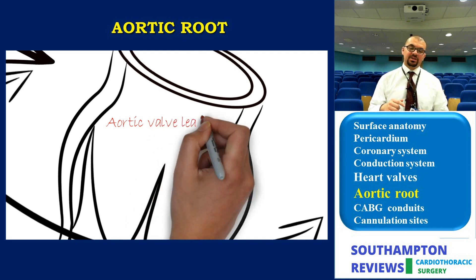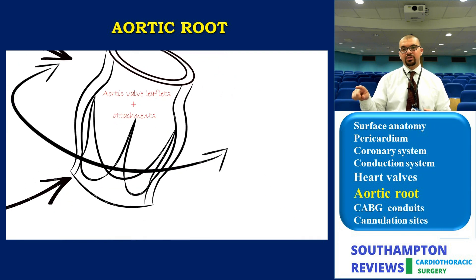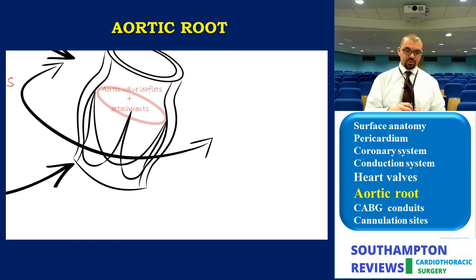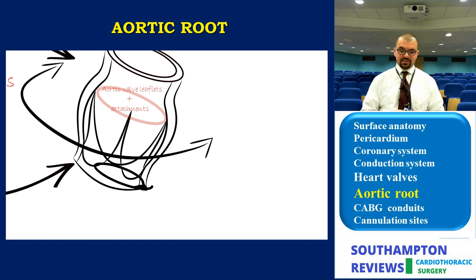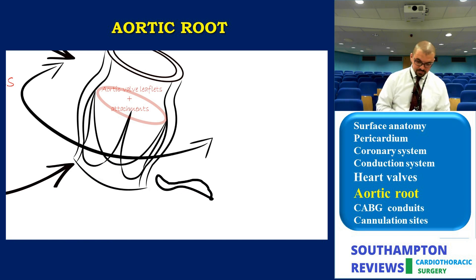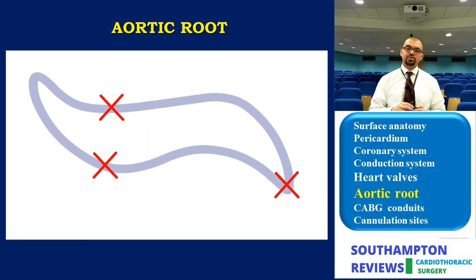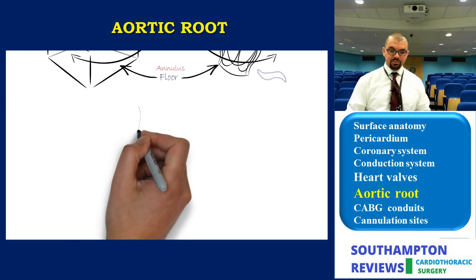The aortic annulus resembles a coronet with three semilunar structures. The lowest point is at the nadir of the attachment points and the highest point extends upward through the inter-leaflet triangles. Every structure of the aortic root contributes somehow to maintaining the competence of the aortic valve, and we will explain this now in detail.